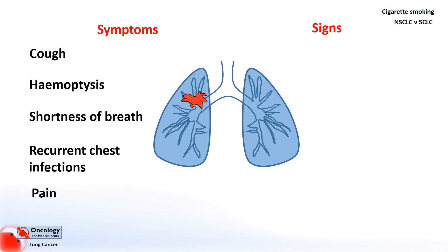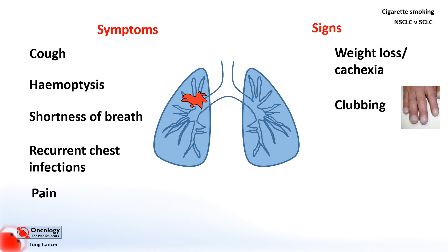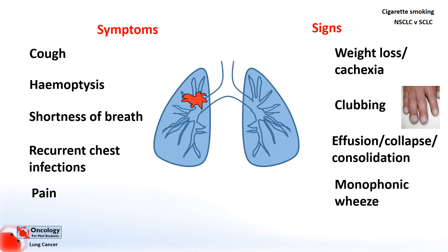In terms of signs — things that you as the clinician might notice when you examine a patient — these include significant weight loss and cachexia, finger clubbing which can occur in non-small cell lung cancers, or if the tumour invades the pleura, pleural effusions can occur. Collapse of a lobe might occur if airways become blocked, and consolidation is common in areas of infection around tumours. A monophonic wheeze is another interesting sign, associated with narrowing of a single airway — as you'd expect with a tumour creating a single tone. Polyphonic wheezes, in contrast, result from narrowing of many different-sized airways, creating a more musical wheeze with lots of different tones, and are more common in conditions like asthma.